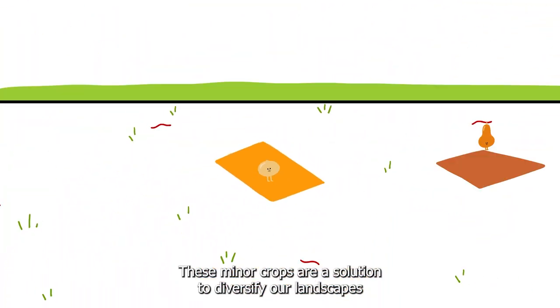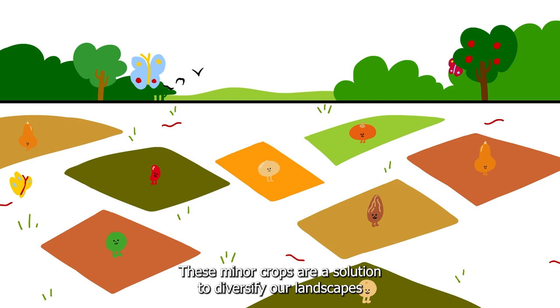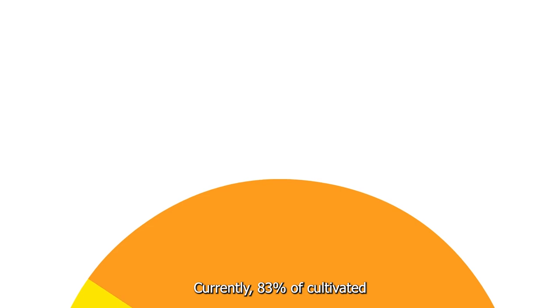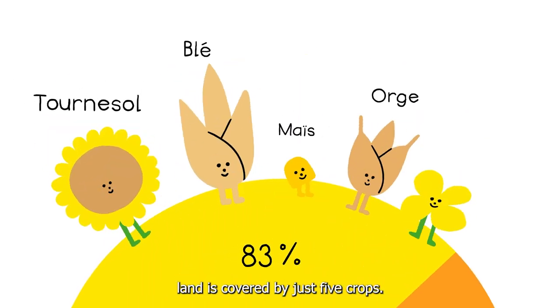These minor crops are a solution to diversify our landscapes and improve the sustainability of our agriculture. Currently, 83% of cultivated land is covered by just five crops.